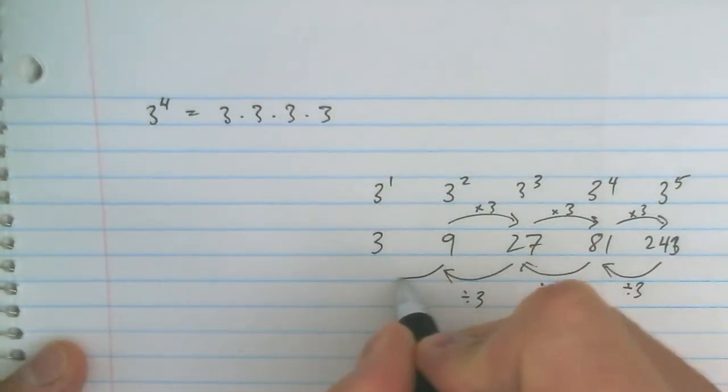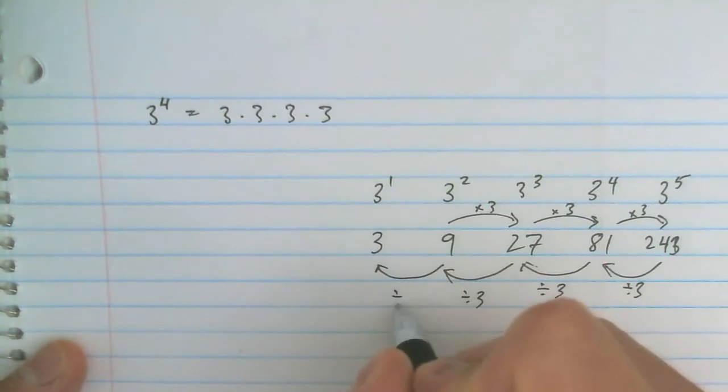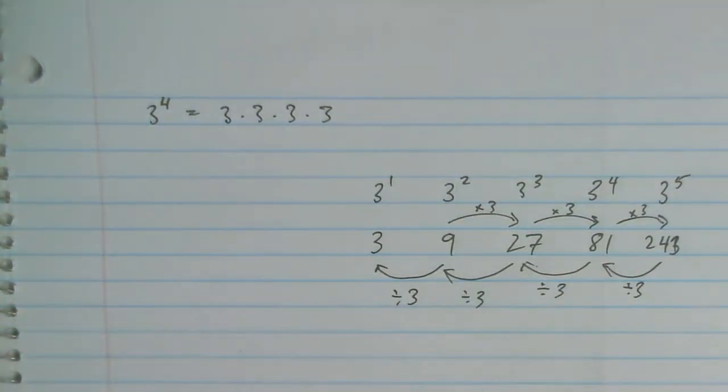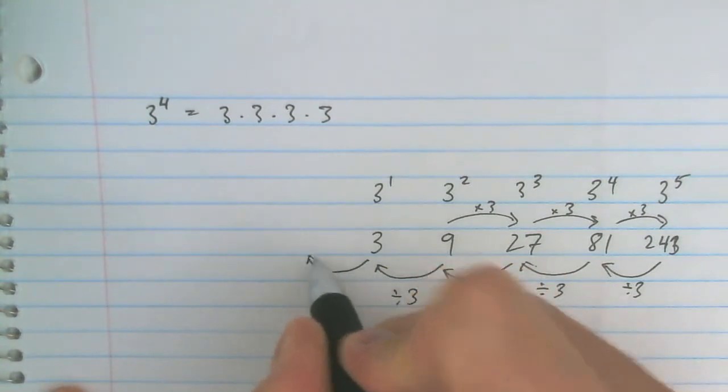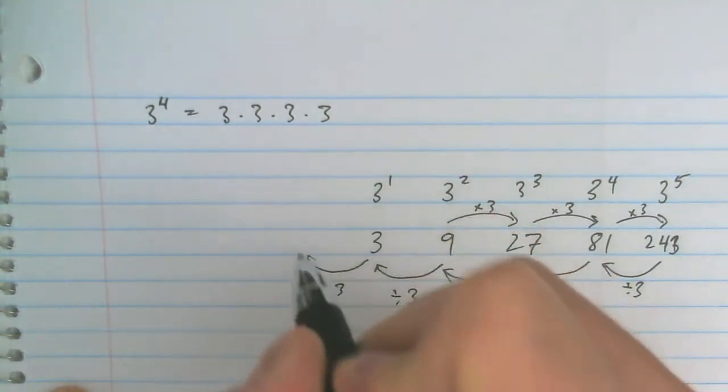If we divided 9 by 3, we would get 3, and if we divided 3 by 3, we would get 1.